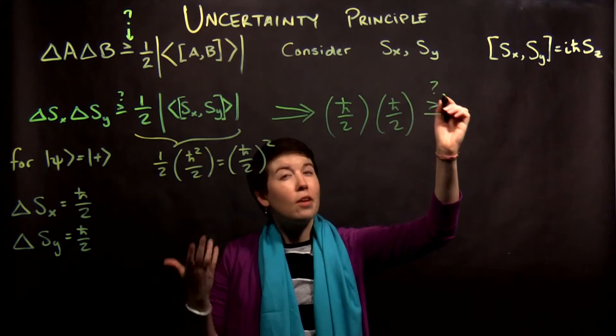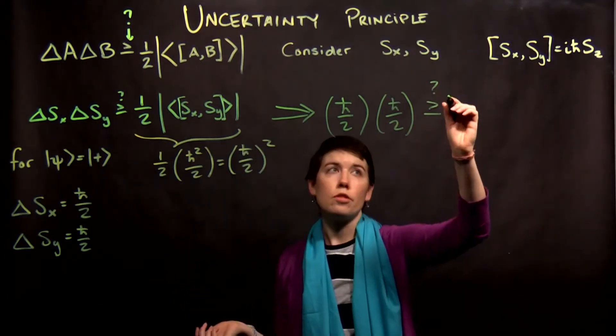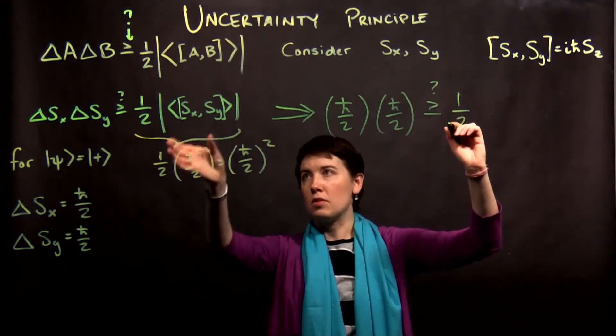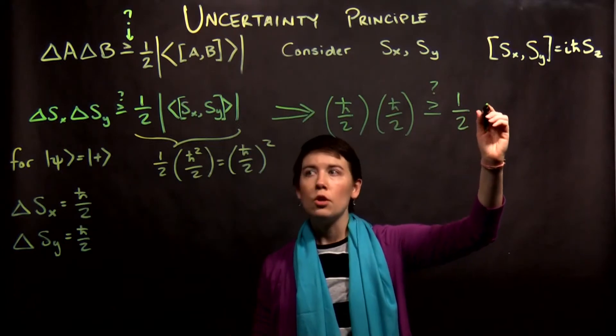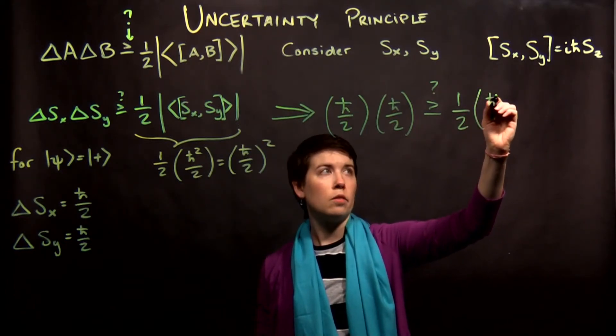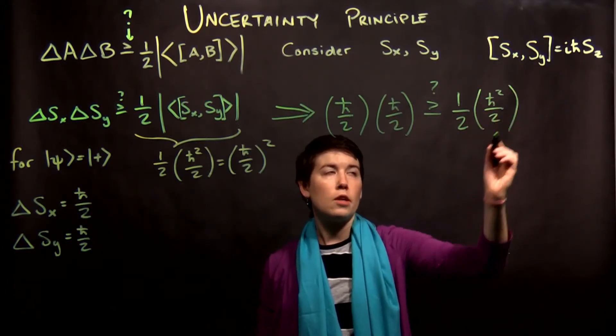And then what we're doing is basically verifying that this is true, saying is this greater than or equal to 1 half times what we calculated over here, which, again, if we write it this way, h bar squared over 2.